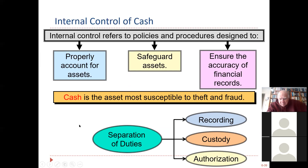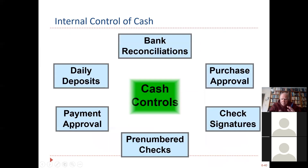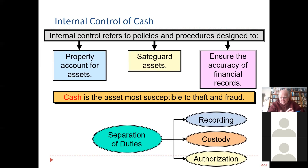Cash is the item most susceptible to theft and fraud. We're going to talk about a couple of internal controls, including the bank reconciliation. One of the most important controls is separation of duties. We don't want one person to both open the mail and enter things into the accounting system and have custody of the money and the computer system. The more people you bring into the process, the less likely there is for theft.